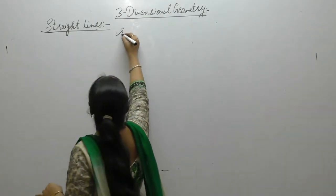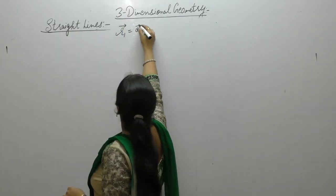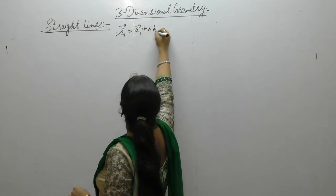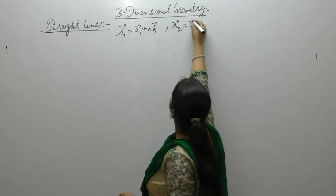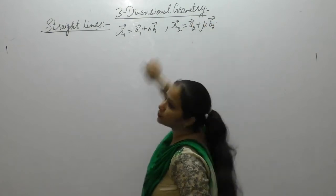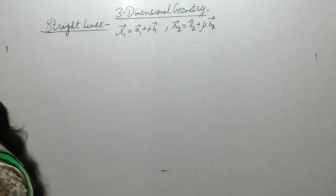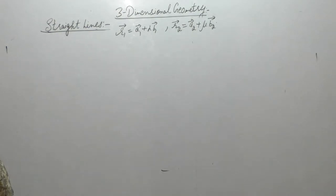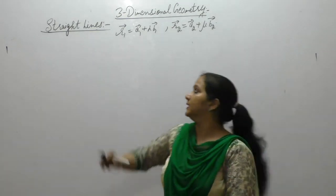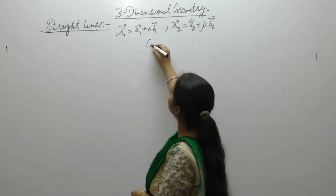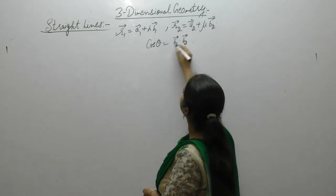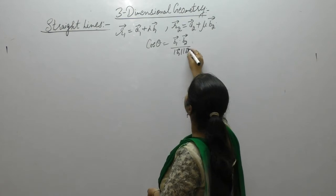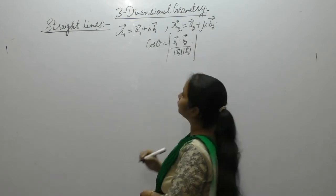We have two lines: r1 vector equals a1 vector plus lambda b1 vector, and r2 vector equals a2 vector plus mu b2 vector. These are two vector equations. The angle between these two lines equals b1 dot b2 upon the magnitude of b1 vector and b2 vector.